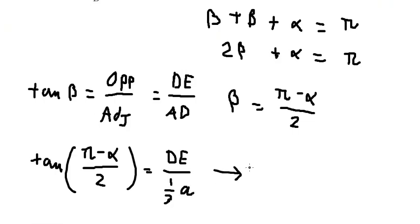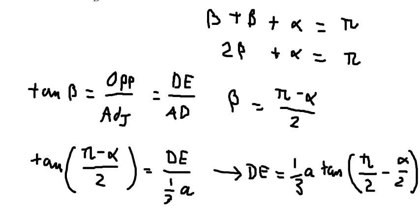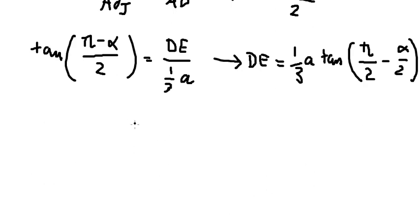So we can find DE. We put this value in here. We know that (π minus α) divided by 2, we can put it like this, and we have the formula.